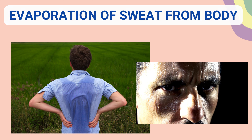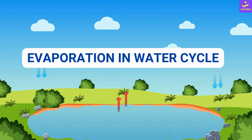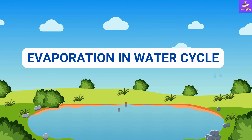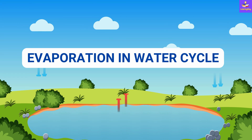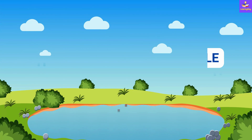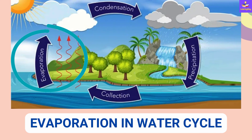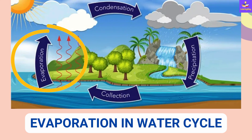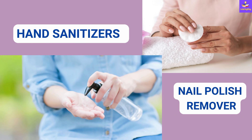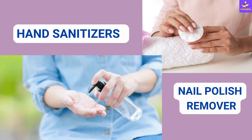Evaporation is also a very important part of the water cycle. The Sun heats up the water in rivers, lakes, or oceans and turns it into water vapor or steam, which then goes into the air.